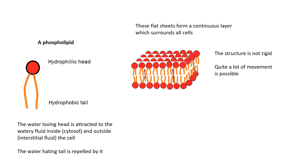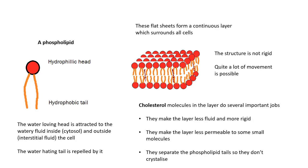You'll see inside, in between these tails, there are molecules. They are cholesterol. These cholesterol molecules do a few jobs. They make the layer less fluid and a bit more rigid. They make the layer less permeable to some small molecules. You don't want too much stuff going in and out. And they separate the tails so that they don't crystallize, so that they don't form a solid. It makes it more rigid, but it stops it turning into a solid.